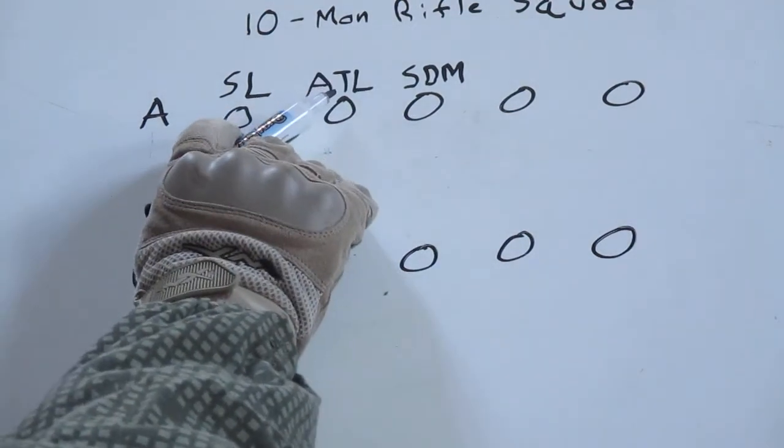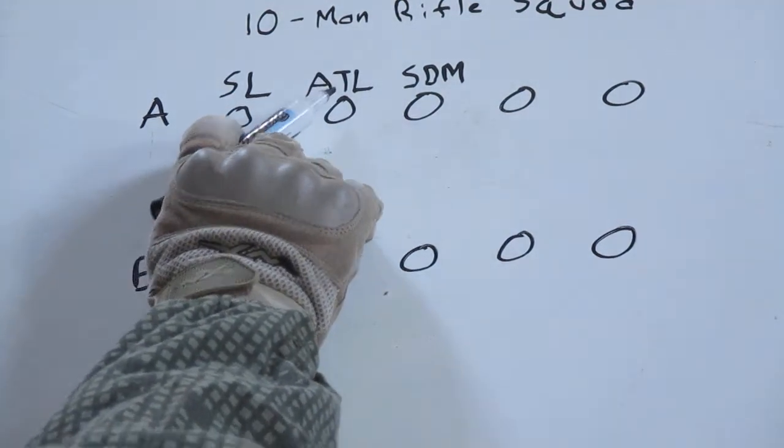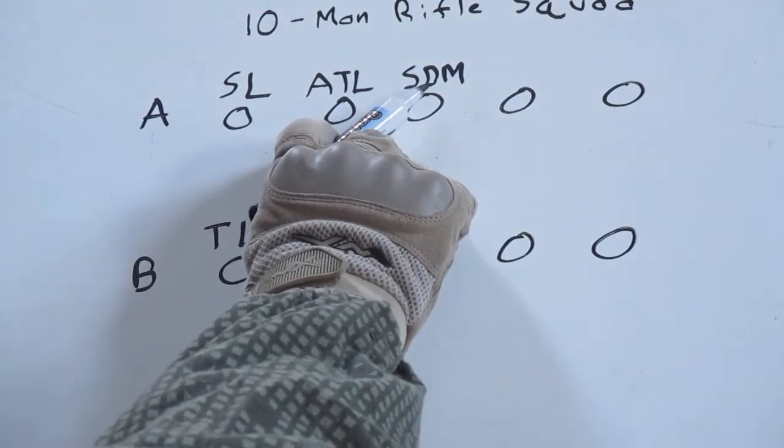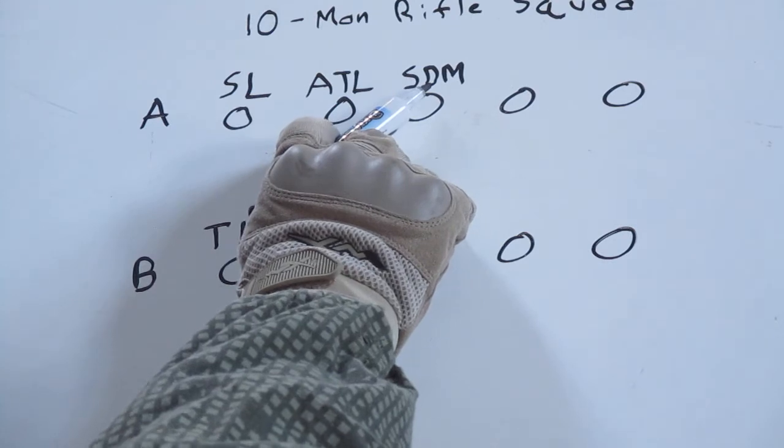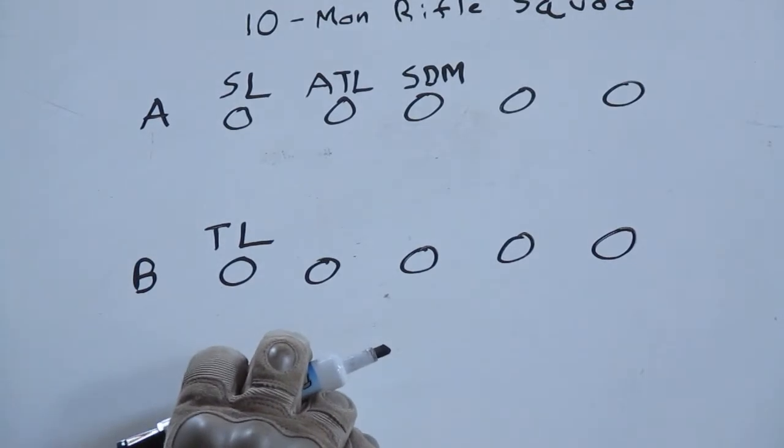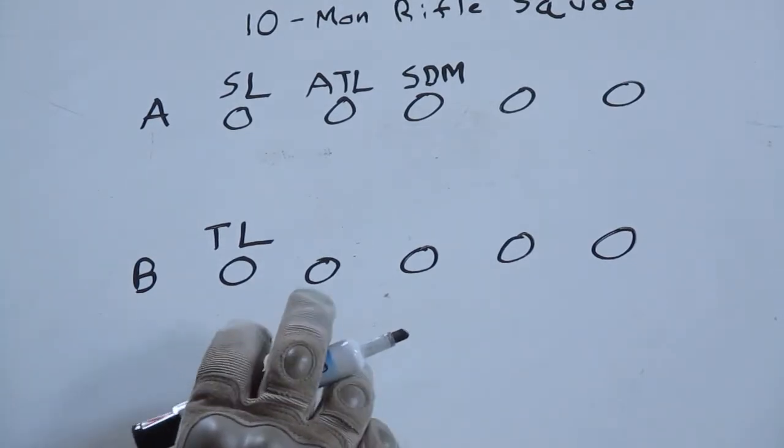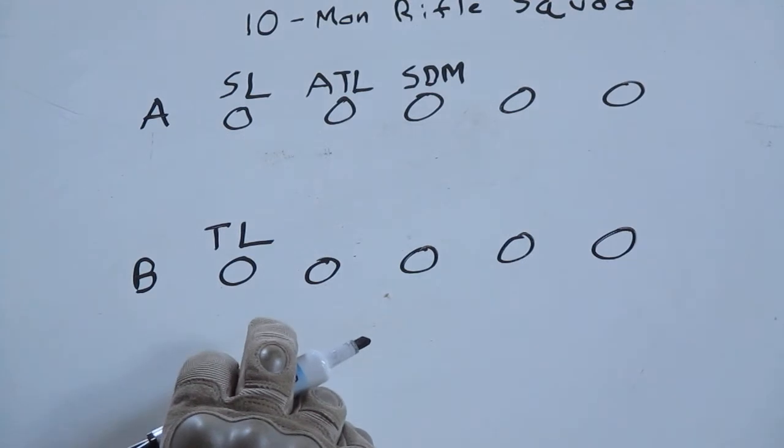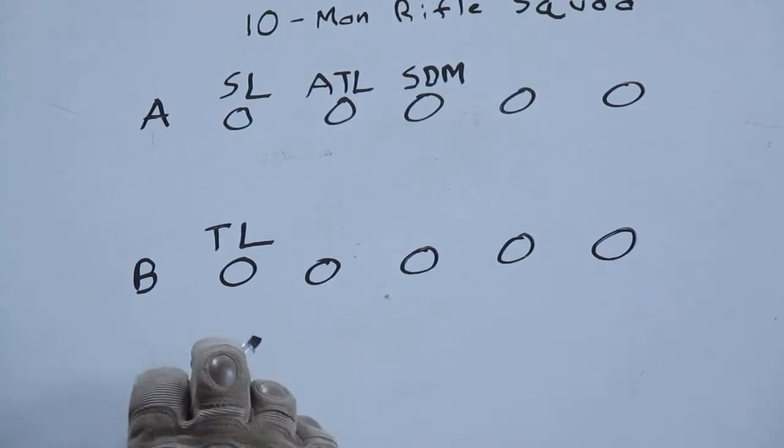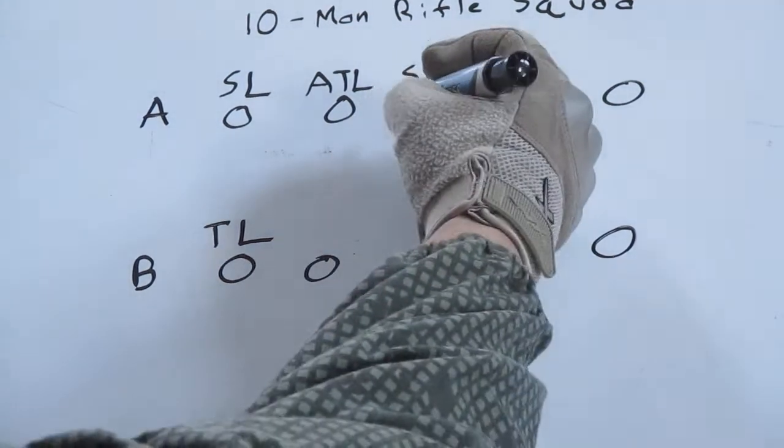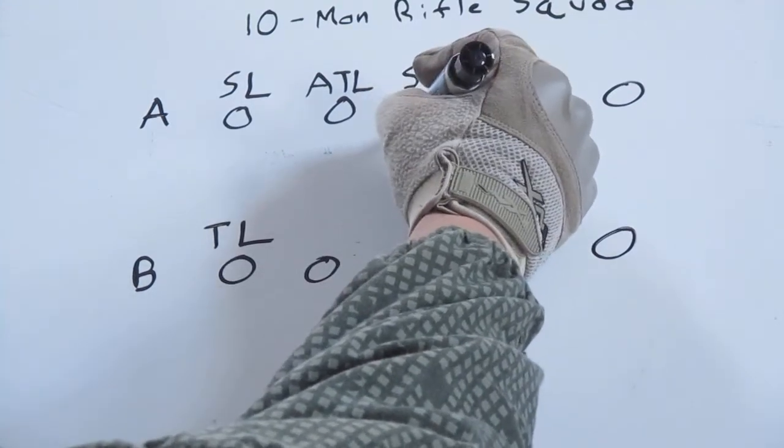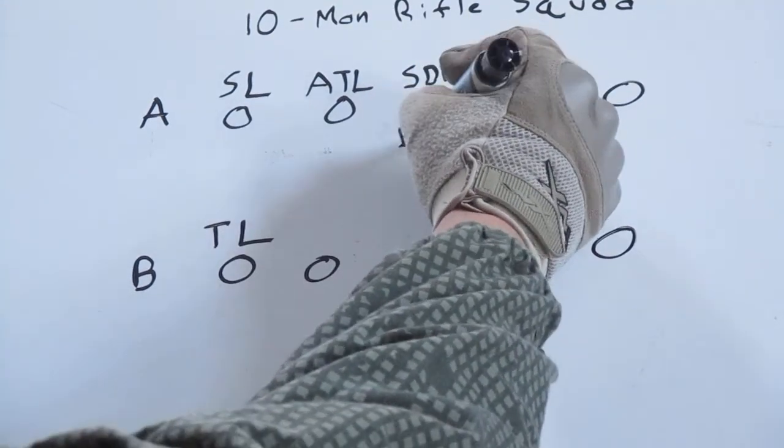To help out in the alpha team in case the squad leader has to link up with Bravo team to lead them somewhere for a particular mission, you have an ATL, an assistant team leader. This other person that's on the alpha team is an SDM, squad designated marksman.